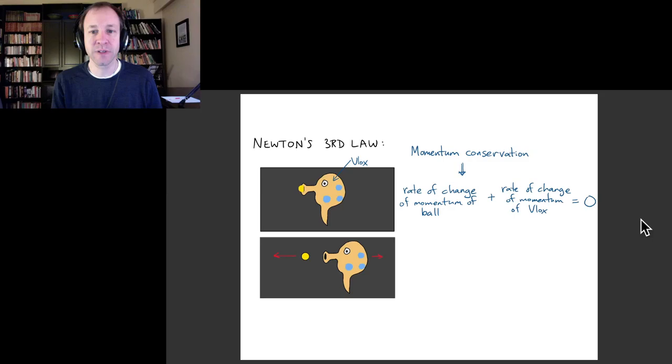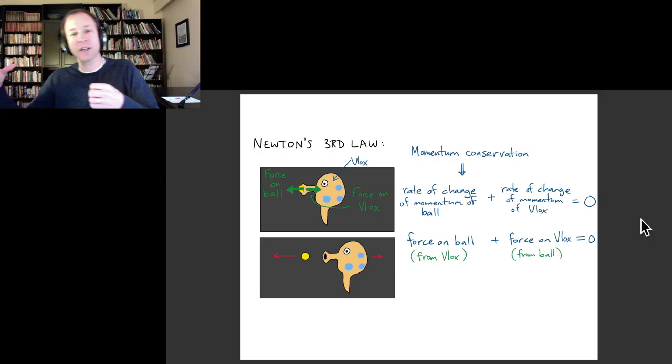We can then immediately say that during this spitting process, the force on the ball from Vlocks is equal and opposite the force on Vlocks from the ball. Okay, so that's why we can see that Vlocks is going off in the other direction, because there's not just a force on the ball. There must also be a force on Vlocks.